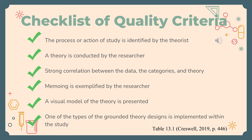In this slide we will be taking a look at a checklist of quality criteria in grounded theory studies pulled from table 13.1 of the textbook. The following checklist includes points such as: the process or action of the study is identified by the theorist, a theory is conducted by the researcher, strong correlation between the data, the categories, and the theory, memoing is exemplified by the researcher, a visual model of the theory is presented, and finally one of the types of grounded theory designs is implemented within the study.